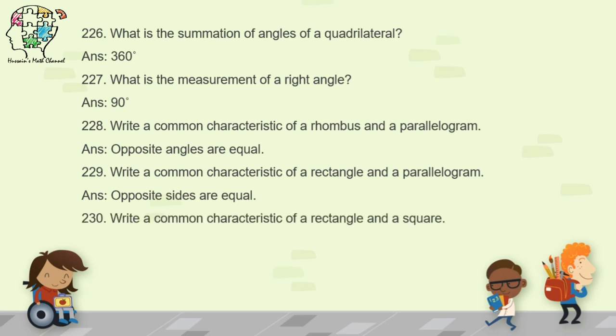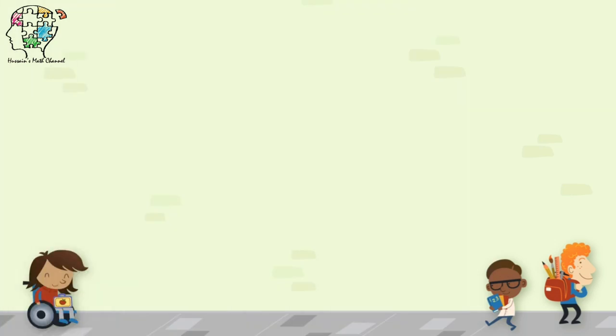Question 230: write a common characteristic of a rectangle and a square. You can write either that all sides are equal or all angles are 90 degrees. Question 231: write a common characteristic of a rhombus and a square. Both have all sides equal.